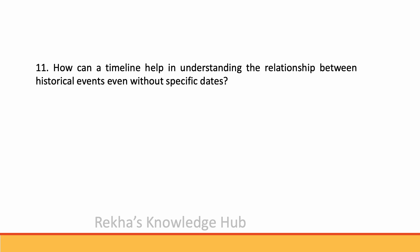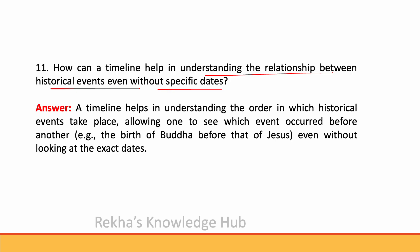How can a timeline help in understanding the relationship between historical events even without specific dates? A timeline helps in understanding the order in which historical events take place, allowing one to see which event occurred before another. For example, the birth of Buddha before that of Jesus, even without looking at the exact dates.